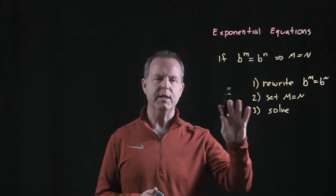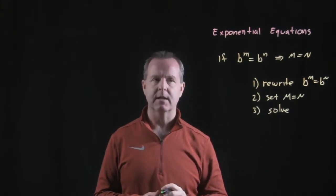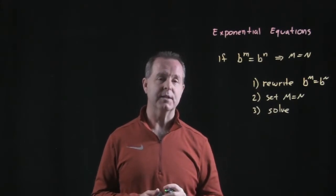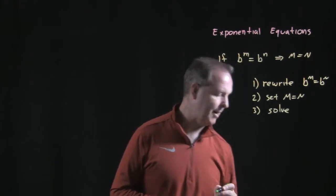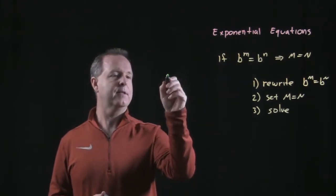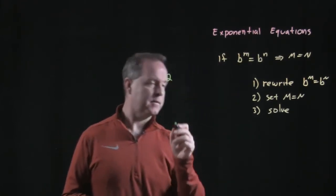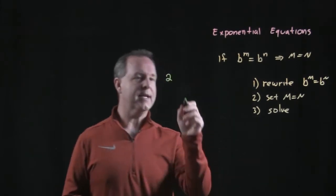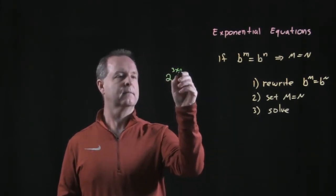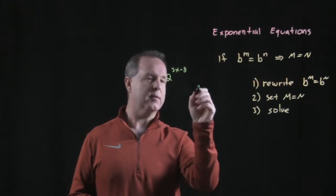We have a three-step process for solving exponential equations. Let's write an example to begin with. I have 2 to the 3x minus 8 equals 16.